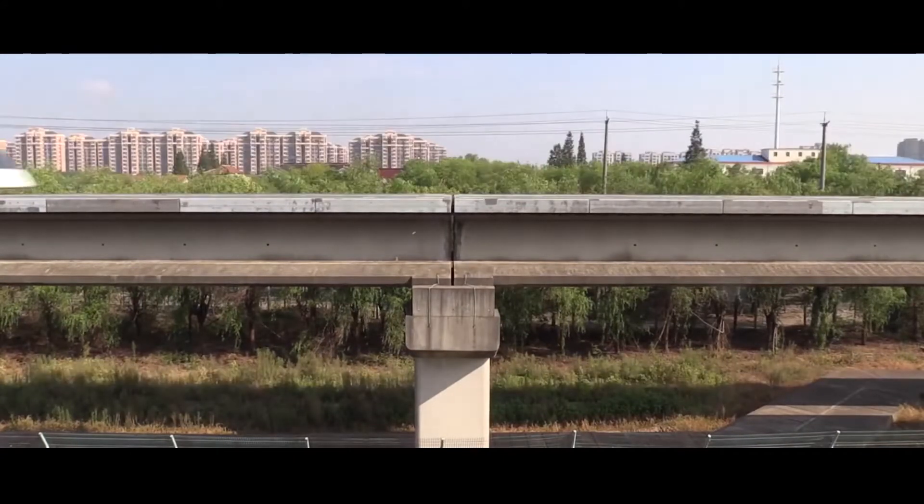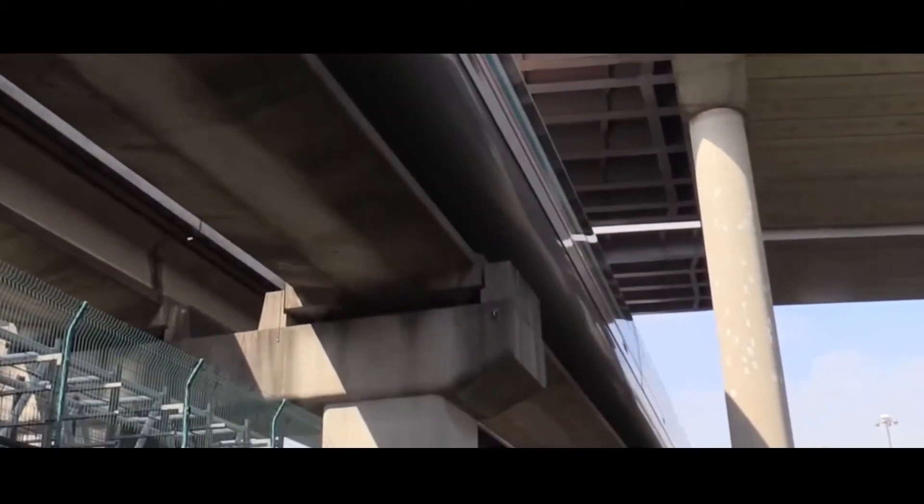Magnetized coils run along the track called the guideway. These repel the large magnets on the train's undercarriage, allowing the train to levitate above the guideway.